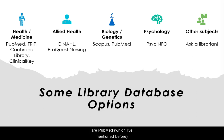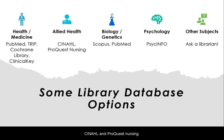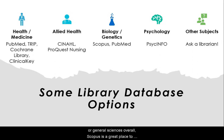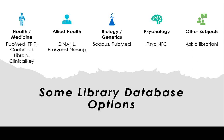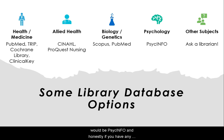The databases I have listed are PubMed, which I've mentioned before, TRIP, Cochrane Library, and Clinical Key, which all have a health and medicine focus. For Allied Health, we have CINAHL or ProQuest Nursing. If you're looking for a biology, genetic, or general sciences component, Scopus is a great place to search, and of course PubMed. A great place to search for psychology-related articles would be PsycInfo, and honestly, if you have any questions at all, ask a librarian.